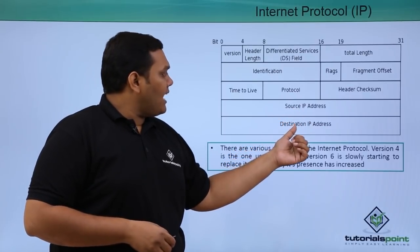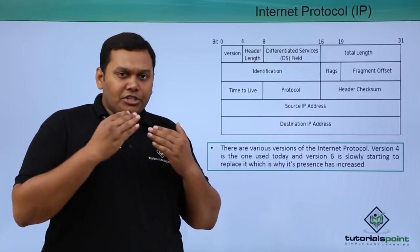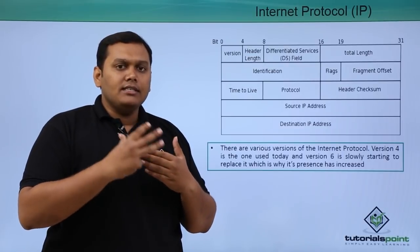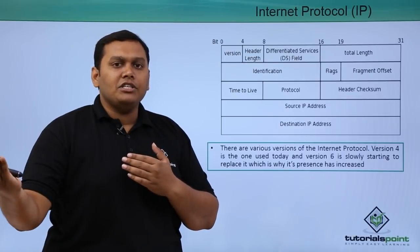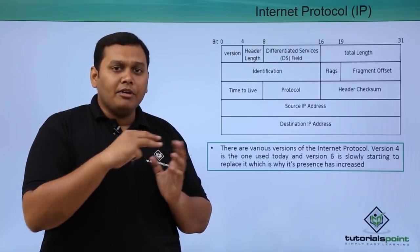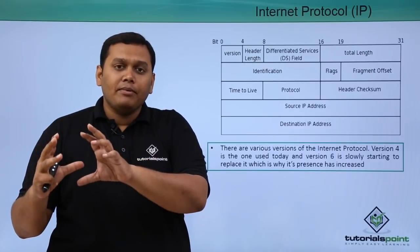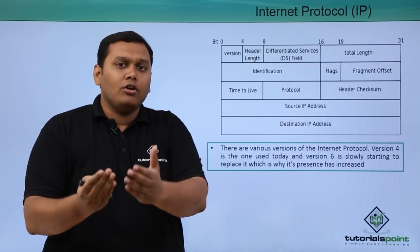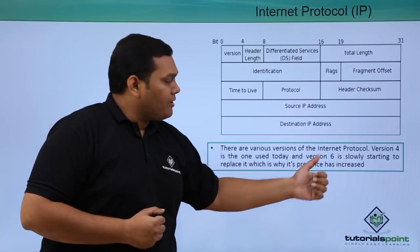The header also contains source IP address and destination IP address. The source IP address indicates from where the data is sent, so the destination device knows where the data is coming from. The destination IP address informs the destination host that data is on its way, so it can send an acknowledgement. There are various versions of internet protocol.